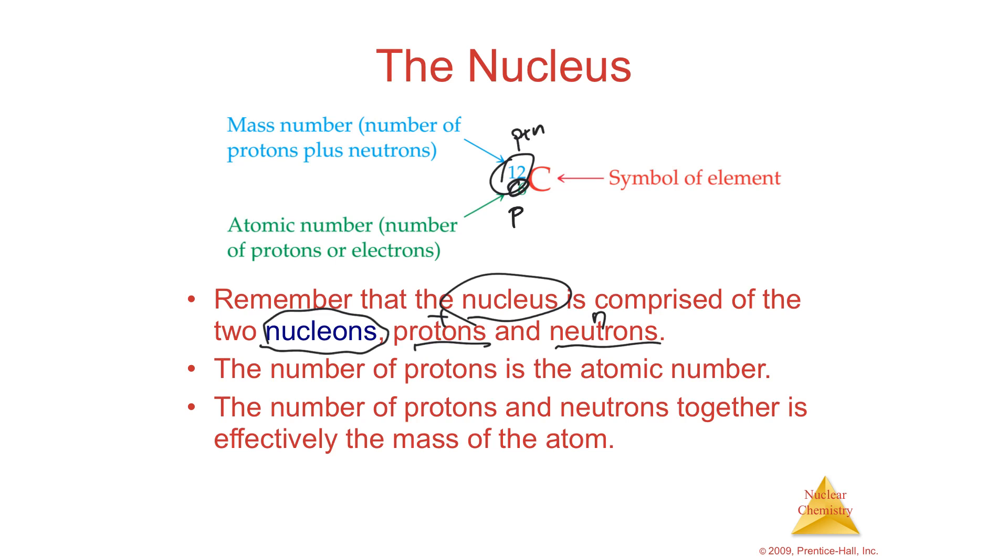If you change the atomic number, so you change this bottom number, you change the element. So carbon, for instance, is only carbon when there's six protons. If there's any other number than six, it's no longer carbon. It's something else. But you can change the number of neutrons. You can make carbon heavier or lighter by changing the number of neutrons.